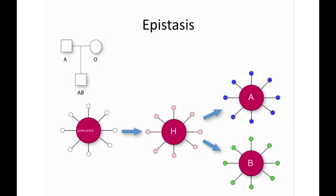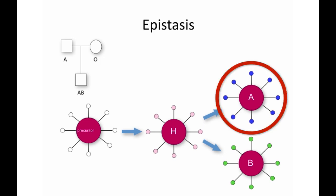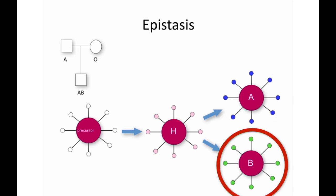Epistasis involves the influence of one gene on the expression of another. The classic example involves the ABO blood group system. The system is a two-allele system in which individuals with the A allele produce an antigen on red blood cells called A, and those with the B allele, an antigen called B. Heterozygotes, who have an A and a B allele, will produce both antigens.